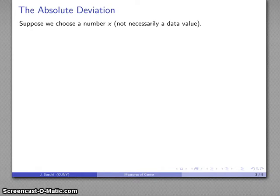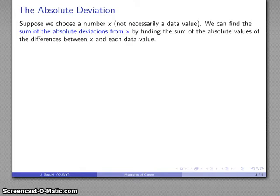Suppose I choose some number x — not necessarily a data value — and I want to find the sum of the absolute deviations from x by finding the sum of the absolute values of the differences between x and each of my data values.